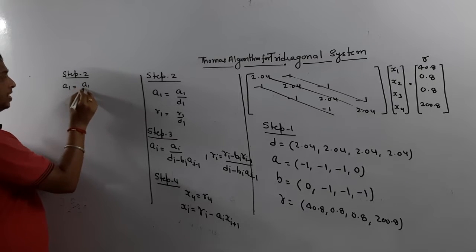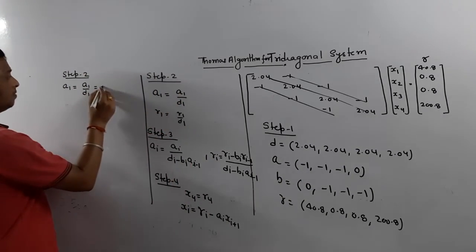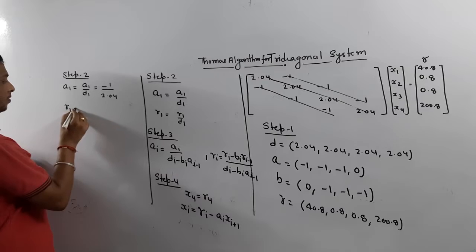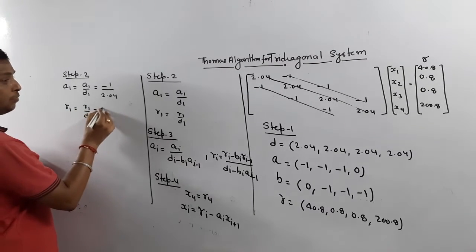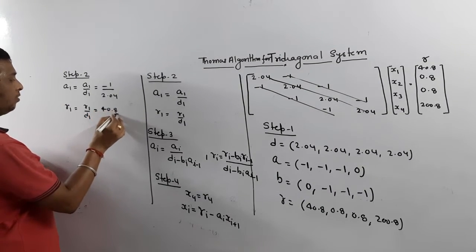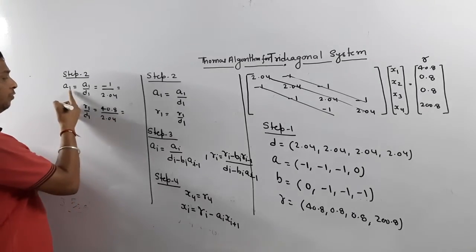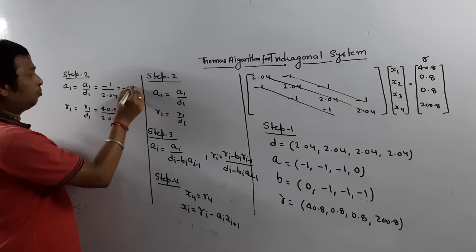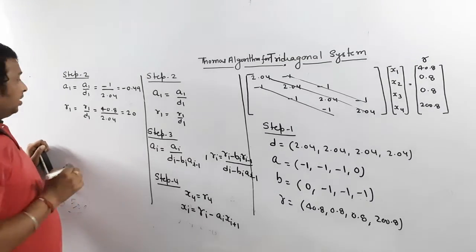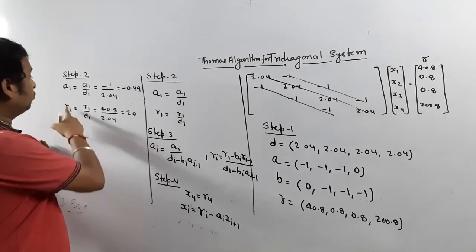Now solving step 2: A1 = A1 / D1. A1 is −1 and D1 is 2.04, so A1 new = −1 / 2.04 = −0.49. R1 = R1 / D1. R1 is 40.8 and D1 is 2.04, so R1 new = 40.8 / 2.04 = 20. These are the improved values of A1 and R1. Whenever A1 and R1 appear in step 3, we use these improved values.